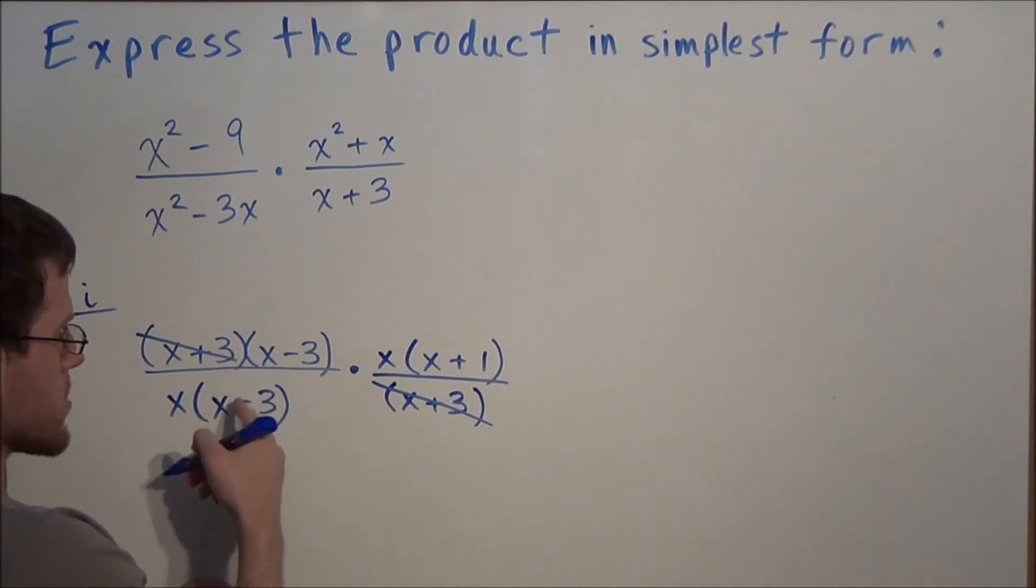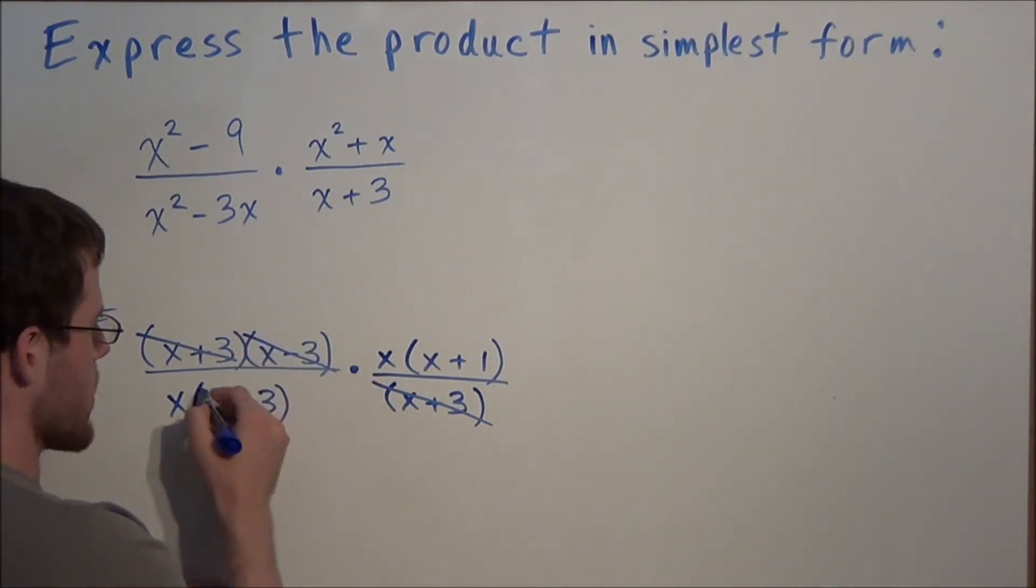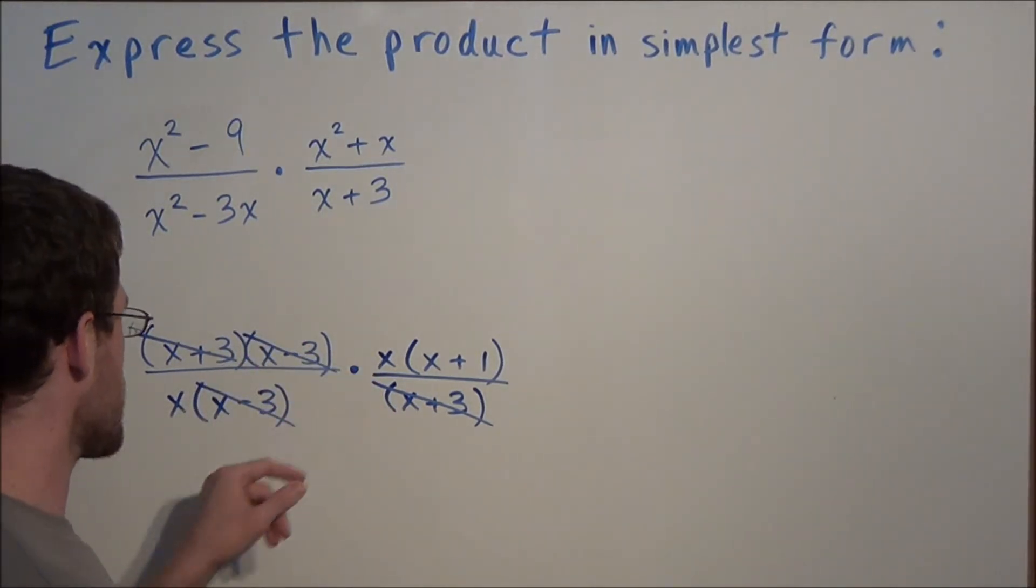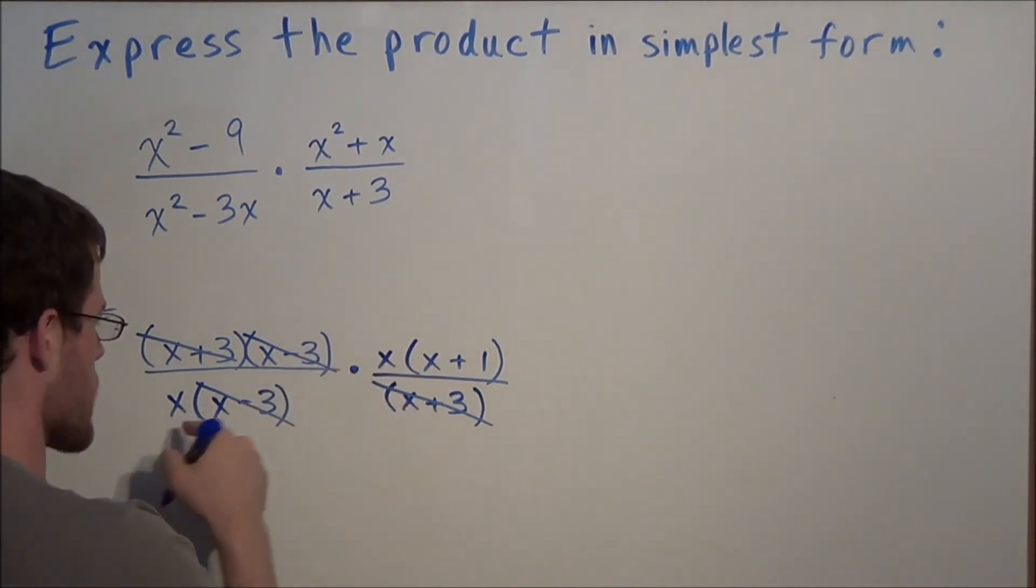We also have x minus 3 over x minus 3 can be canceled out. Finally, the last common factor between the numerator and denominator is x and x, so we could cross out the common x's.